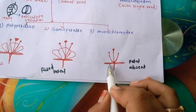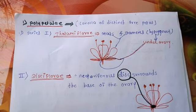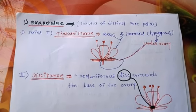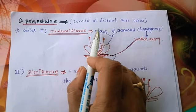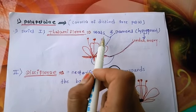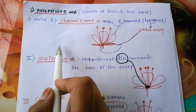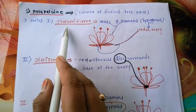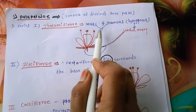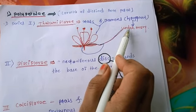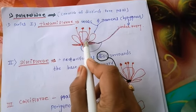In monoclamide, petals are absent — only the sepal (calyx) is present but petals are absent. In polypetaly, the corolla has distinct free petals. The first series is thalamiflorae, where petals and stamens are hypogynous, meaning they are inserted below the ovary. The diagram shows stamens, petals, gynoecium, and androecium.